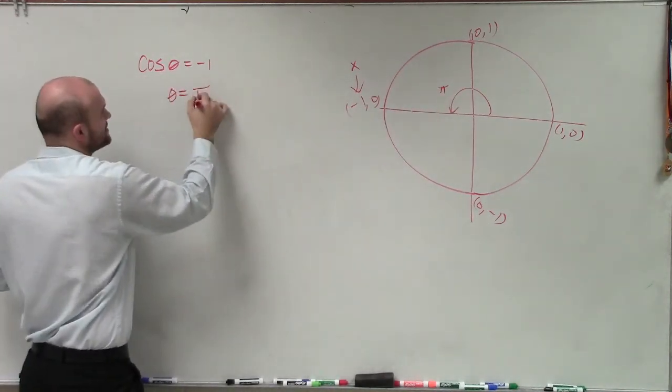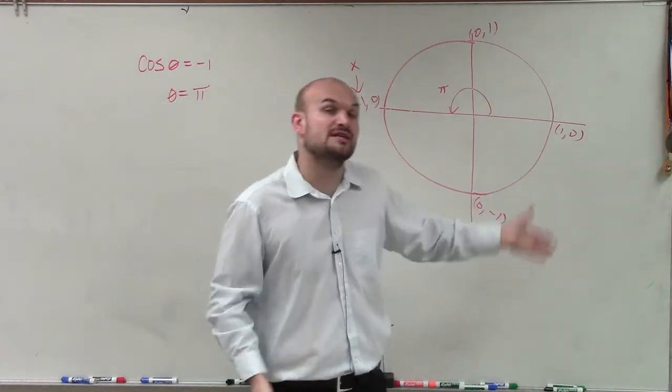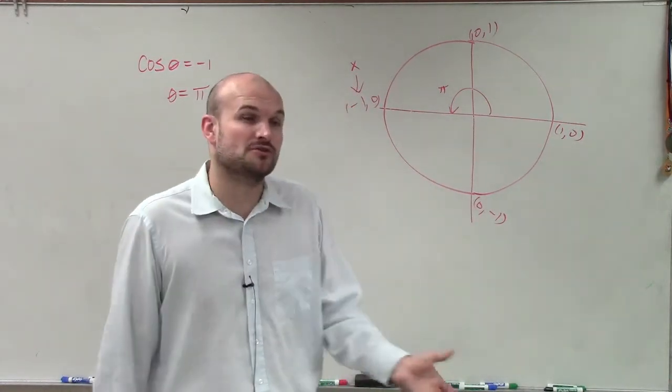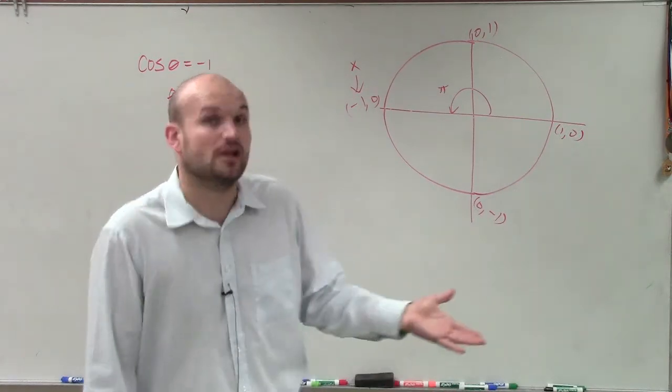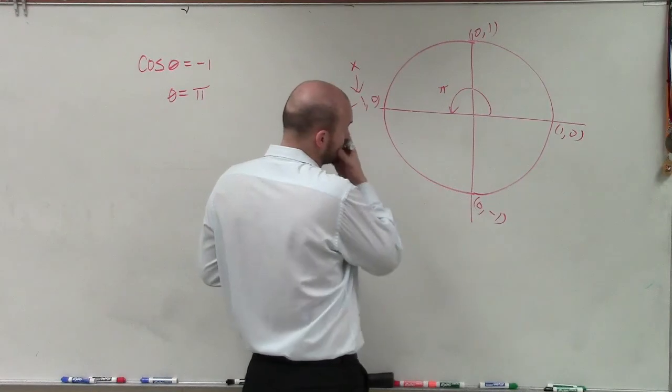I can say theta is going to equal pi. Now that's going to be all the solutions between 0 and 2 pi, which is going to make up the unit circle. But if I ask you to find all of the solutions, not on any constraints, well, we notice that here...